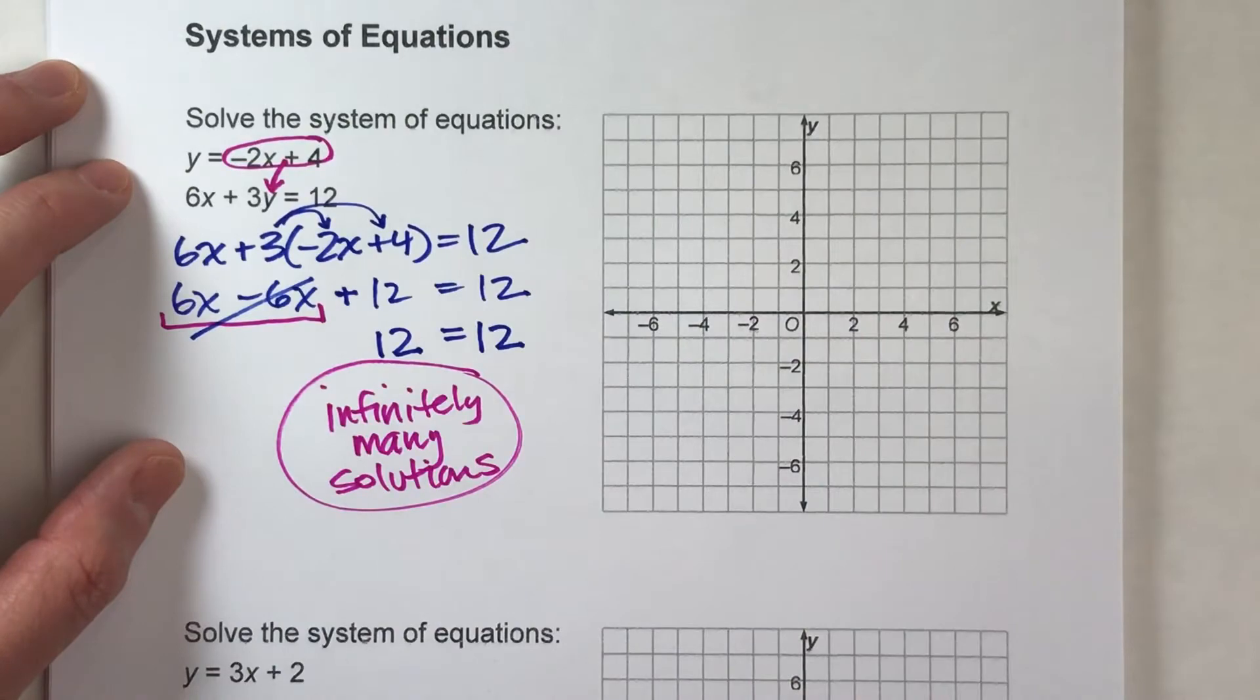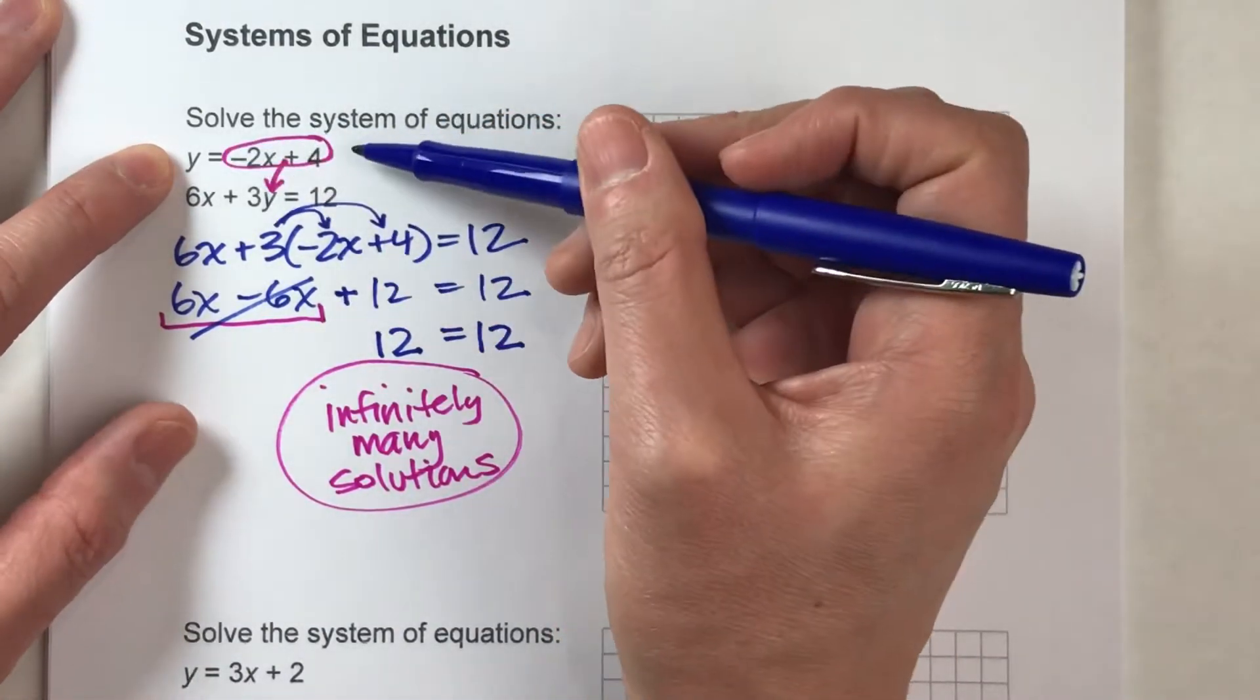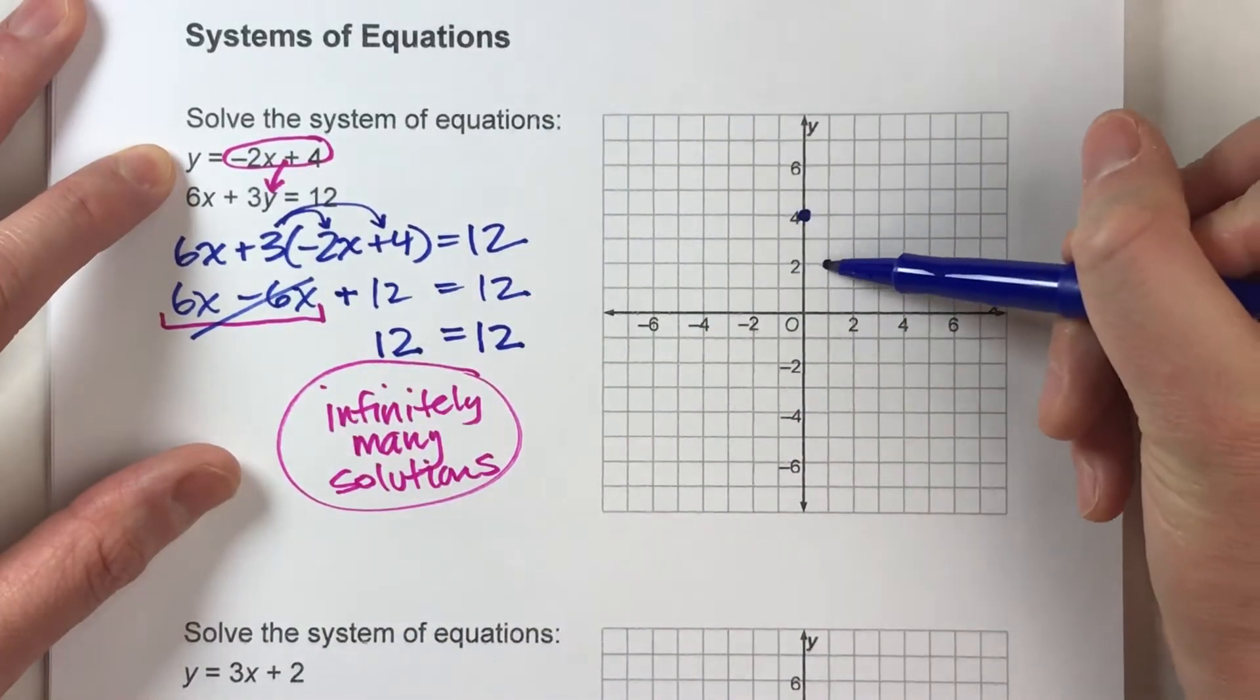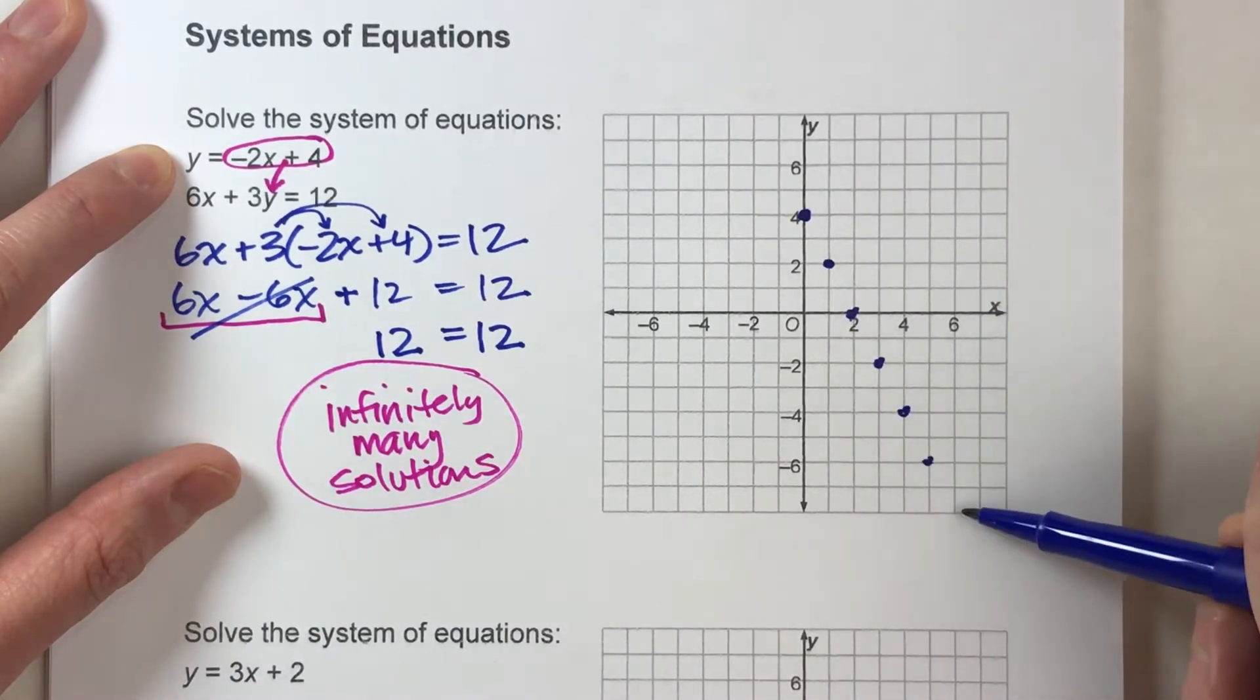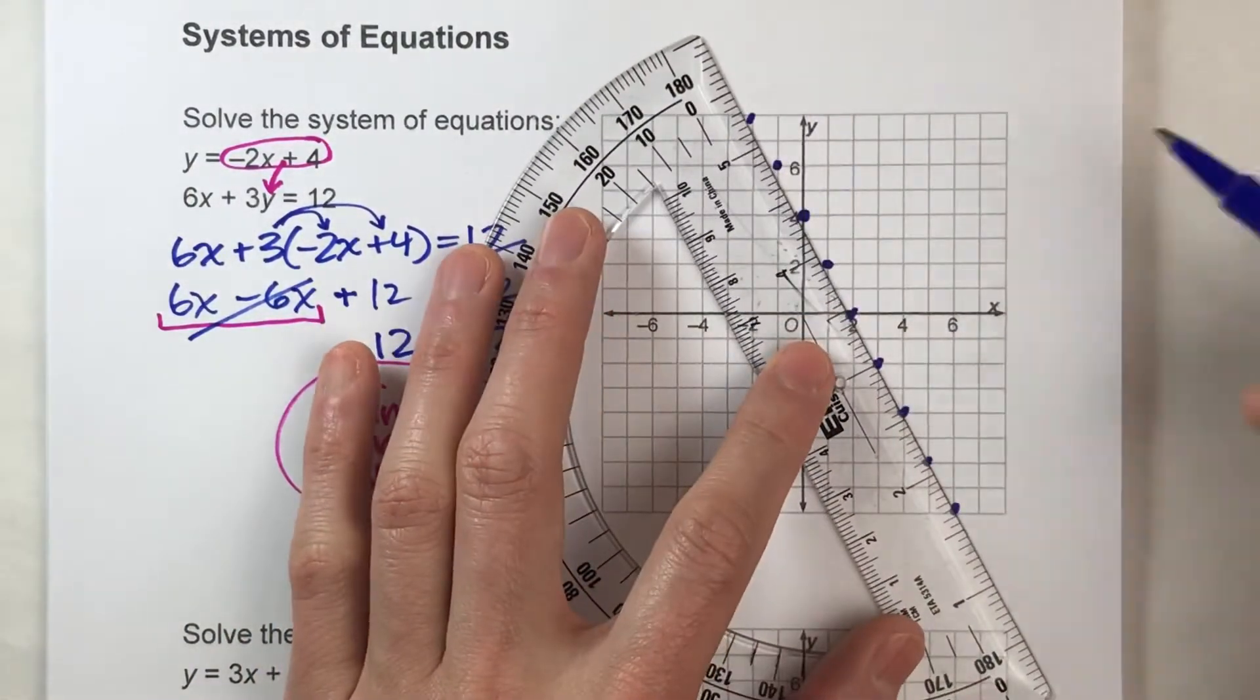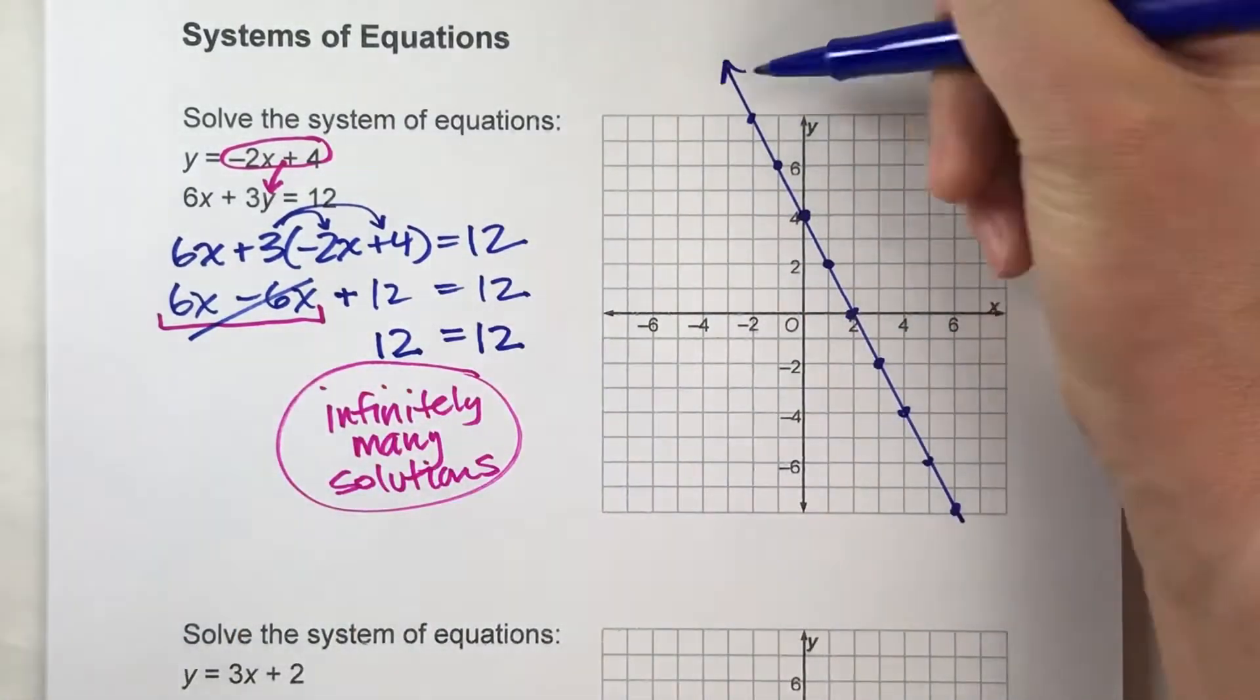Now let's see what this looks like on a graph. This first equation is in slope-intercept form, so this one's easy to graph. My y-intercept's 4 and my slope is -2, so it means down 2, right 1, down 2, right 1. So it's going to follow this pattern here, and I will continue it the other way. And I'll draw my line.